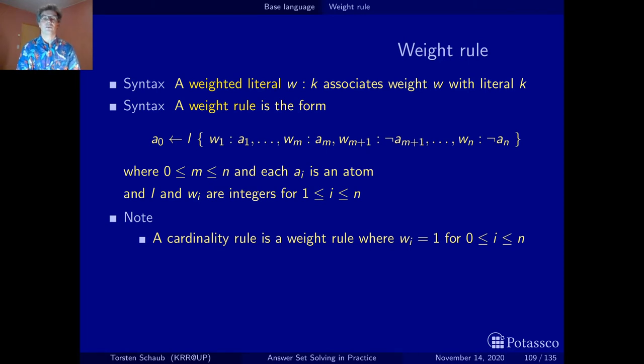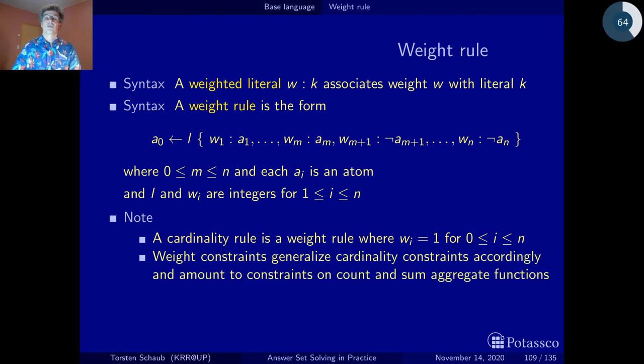In the same way, we then have not only cardinality constraints but also weight constraints with lower and upper bounds. In fact, they amount to constraints on count and sum aggregate functions. What we do is we look at sets and then we apply a function on the set—either we do a count or we do a sum. These are called aggregate functions; we aggregate several elements and then apply a function on it.